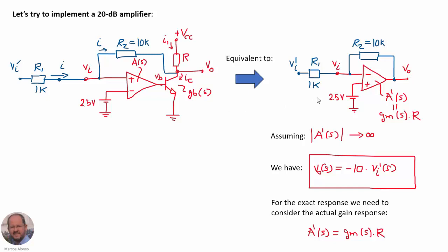This circuit is equivalent to another circuit in which we have a voltage operational amplifier with a certain gain, as we have seen previously. Assuming the gain is very high, or within the range where the gain is very high, we will have that the output voltage is minus 10 times the input voltage VI prime. Of course, for the exact response, we need to consider the full expression of the gain A prime, which is given by GM times R.